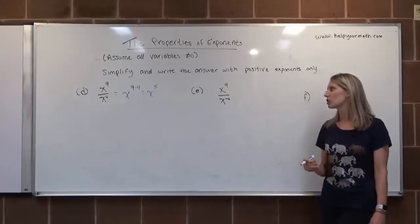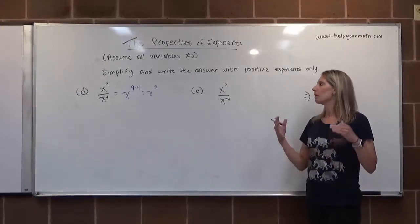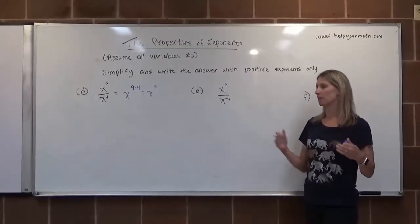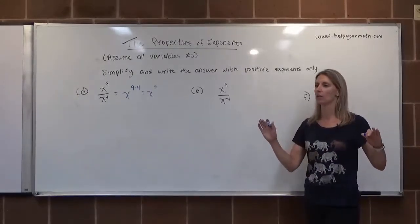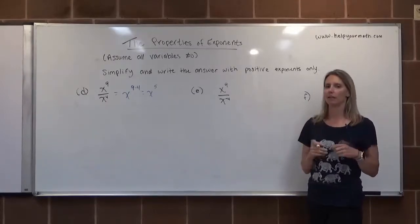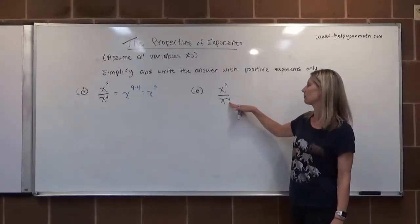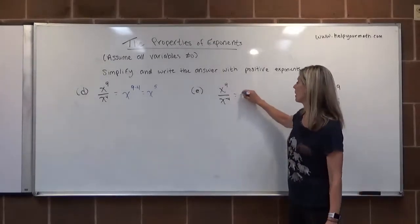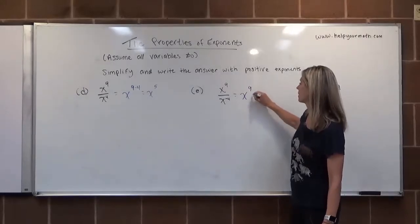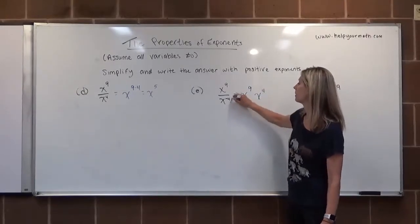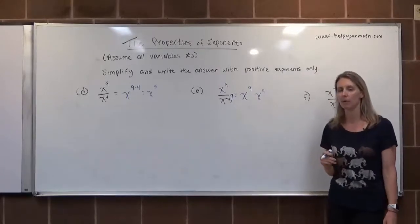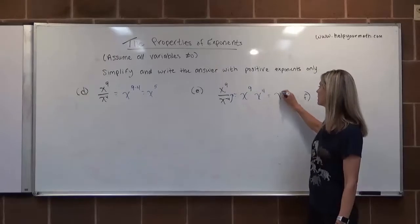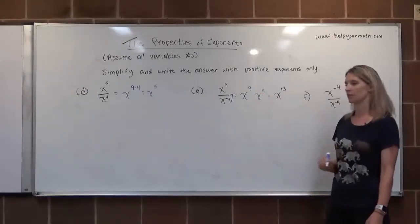For letter E, my suggestion is: anytime you have a negative exponent, before doing anything else, switch it around so everything has positive exponents. This x to the negative 4th will be positive if I move it up to the numerator, which gets rid of the fraction altogether. So it becomes x to the 9th times x to the 4th — now it's same base multiplication, 9 plus 4, which is x to the 13th.